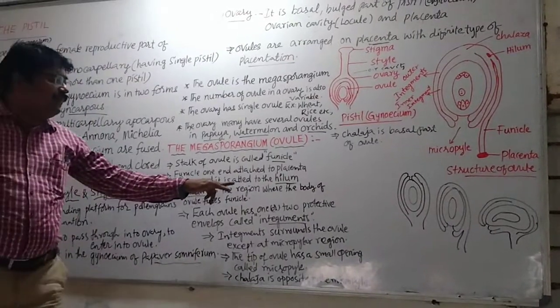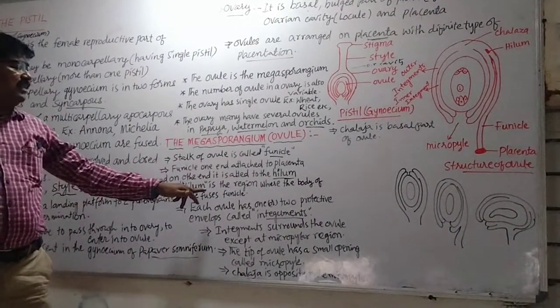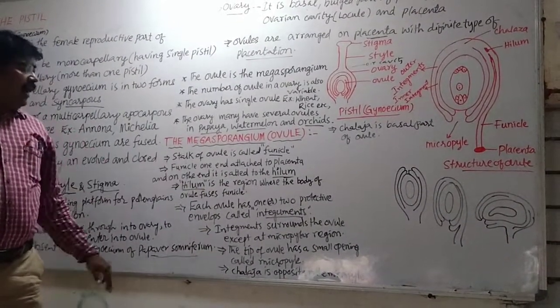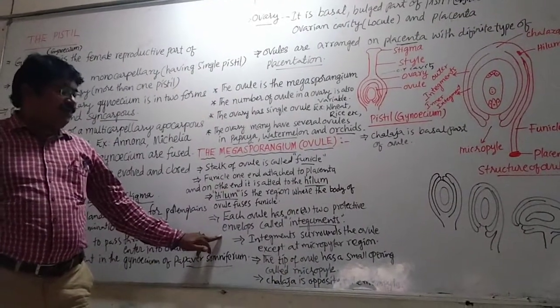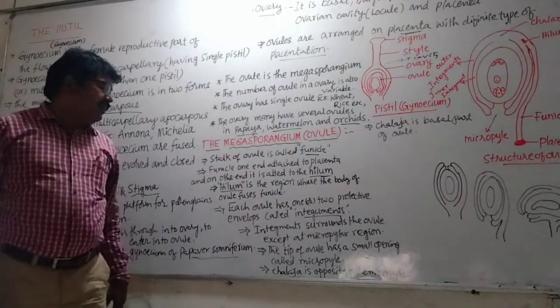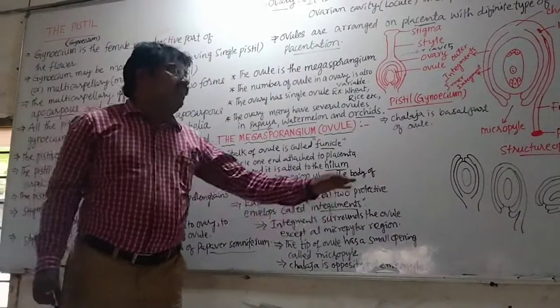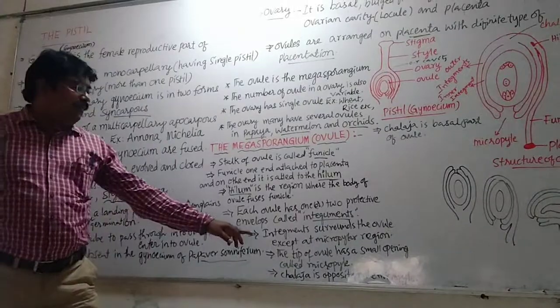And each ovule has one or two protective envelopes called integuments, and integuments surround the ovule except at the micropyle.